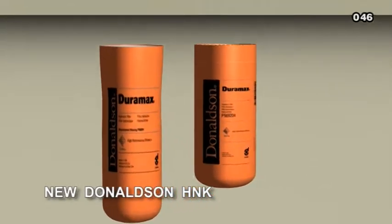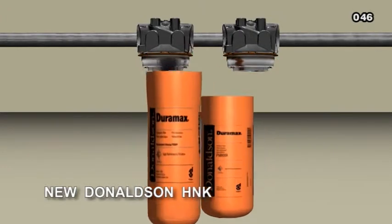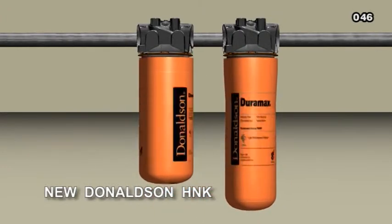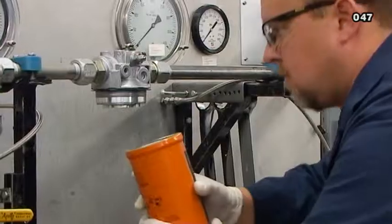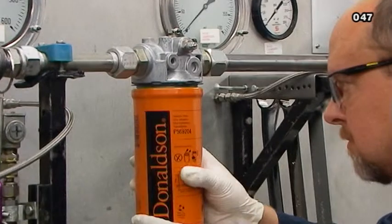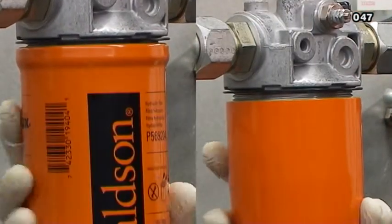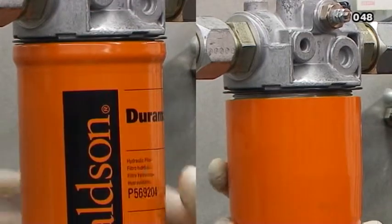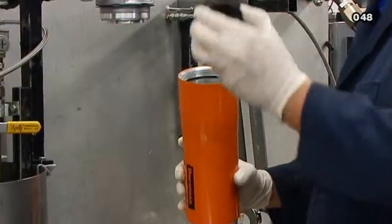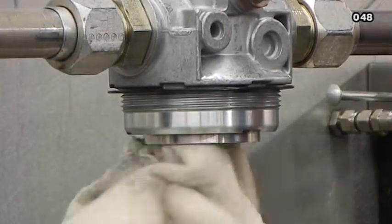This new Duramax filter allows you to choose between a spin-on or bowl cartridge-style filter without changing heads. The new filter interface makes service easier and provides reliable sealing without having to torque to specification. Its improved performance is a necessity in some applications for meeting ever-increasing system cleanliness requirements.